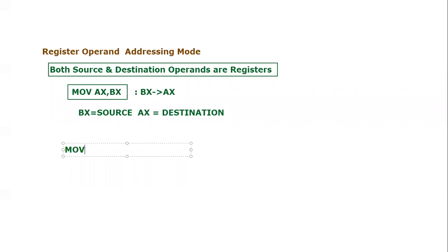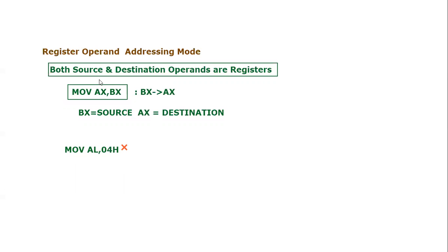Let's consider another example: MOV AL, 04h. Is this register operand addressing mode? No, it is not, because one of the operands — 04h — is an immediate value, not a register. The destination AL is a register, but 04h is an immediate value. So this instruction is not an example of register operand addressing mode.